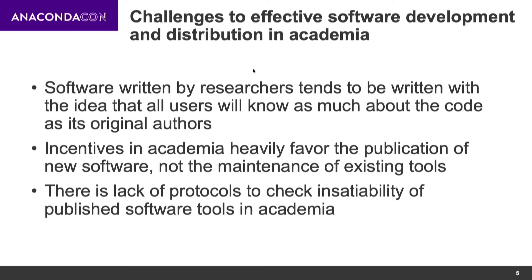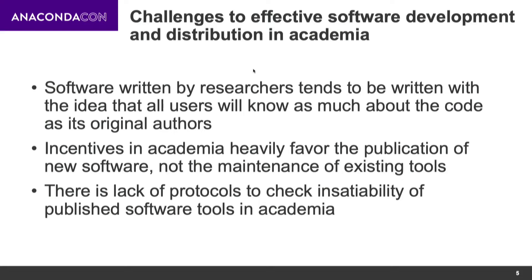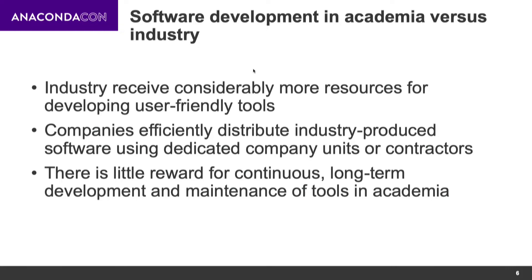In academia, the main appreciation comes from publishing, and there are lots of resources and funding for new discoveries. However, there is a lack of resources to maintain tools. If you forget to include the results section in a paper, it will be automatically rejected — but if you develop software, you can do it in any way possible and it will probably sneak through, because there is no formal procedure to check usability. The whole burden falls on reviewers, who often don't have time or enough expertise.